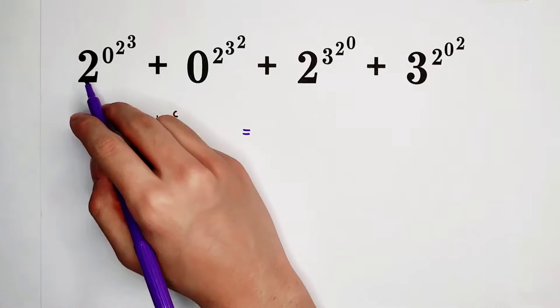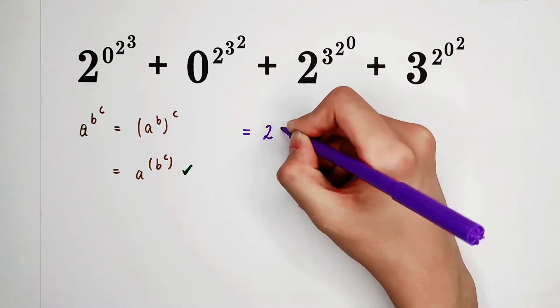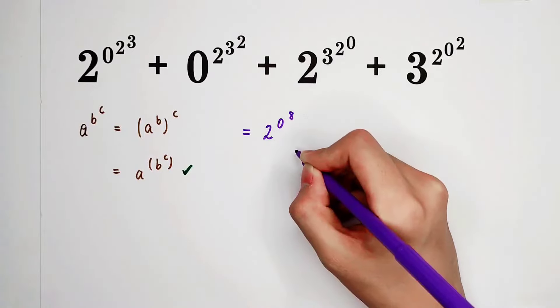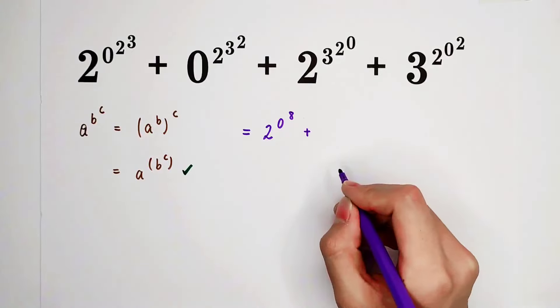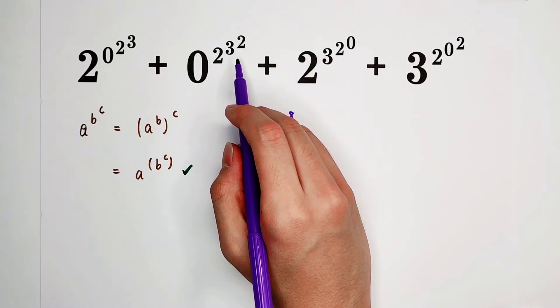The first one, 2 to the power of 0 to the power of 2 to the power of 3. It is, of course, 2 to the power of 0 to the power of 8. The second one, 3 to the power of 2 is 9, and 2 to the power of 9 is, oh, it is a little bit big.